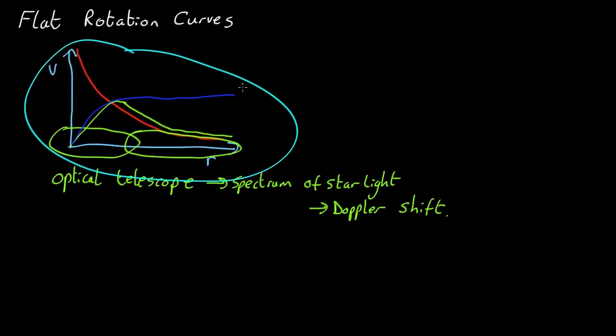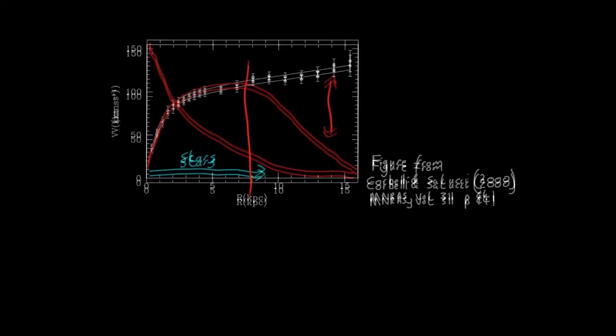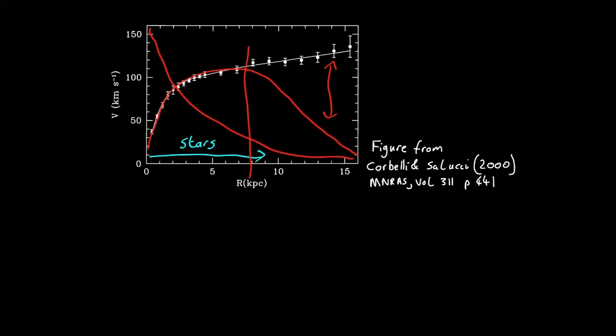So what could possibly be going on here? Well, this isn't just seen in M33. Pretty much all disk galaxies show these flat rotation curves. They rise from low values in the middle, but then they keep on flat, as far out as you can measure them.